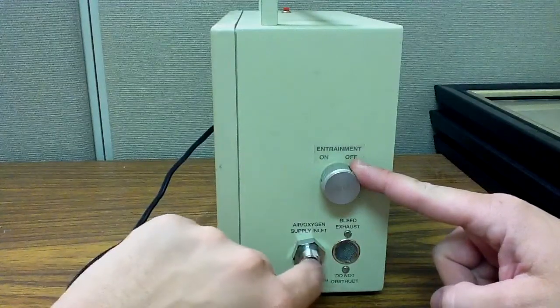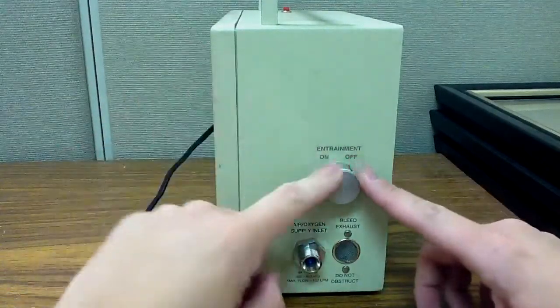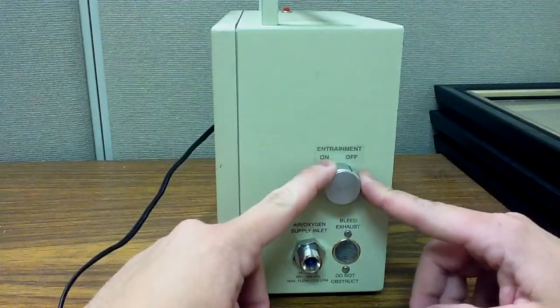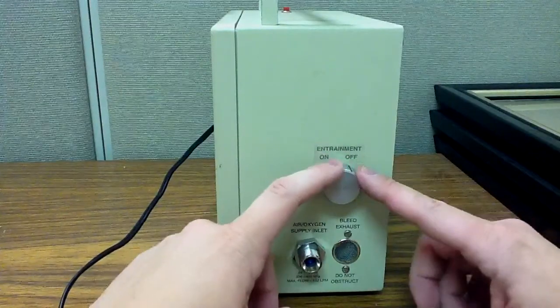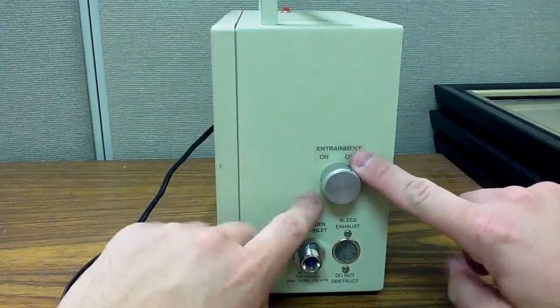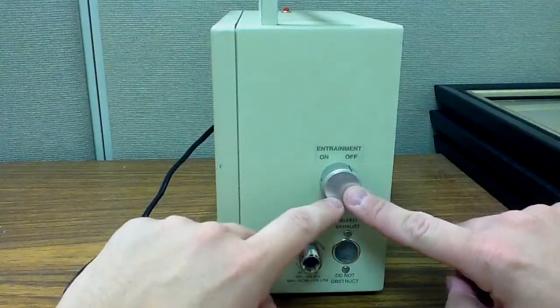Every bit of oxygen that's coming into the high-pressure source is going to be delivered to the patient by the ventilator. So what this means is my FiO2, whatever my patient is getting, will be 100%. There's absolutely no entrainment of atmospheric air. So this will be 100% oxygen.